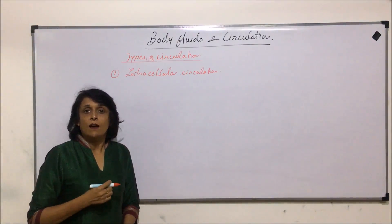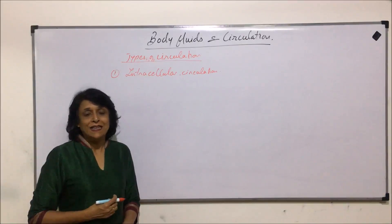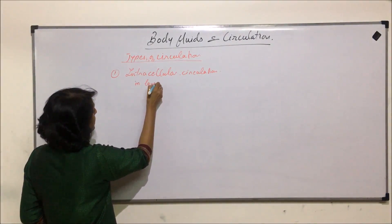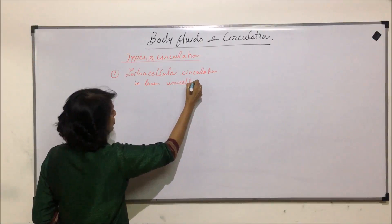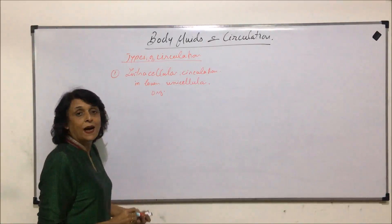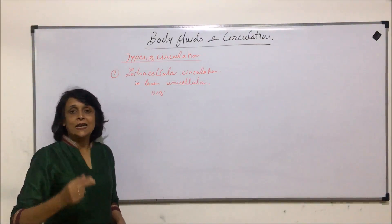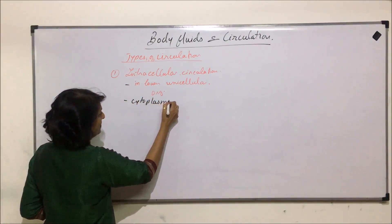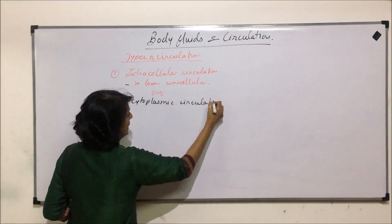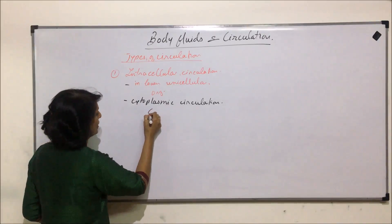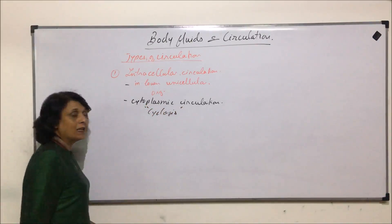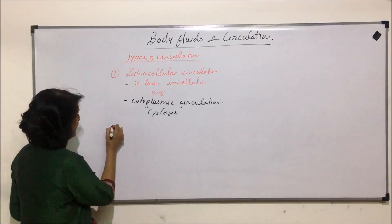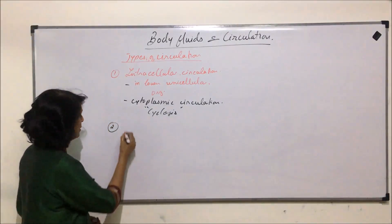The first type is intracellular circulation. This is seen in lower unicellular organisms where it is the cytoplasm which is responsible for distribution of gases and nourishment — that is, the absorbed food. In lower unicellular organisms like amoeba or paramecium, only the cytoplasm is circulating inside the cell, so it is called cytoplasmic circulation, also known as cyclosis.